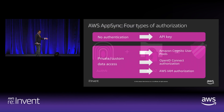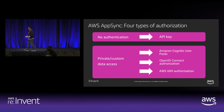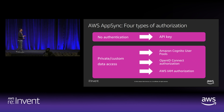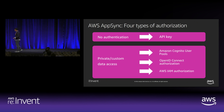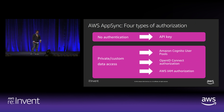AWS AppSync supports four types of auth modes covering both authentication and authorization. For public data access, we support API key — you specify the X-API-Key in the header, and any user with that key has access to any query or mutation in GraphQL. The other three — Amazon Cognito User Pools, OpenID Connect-based authorization, and AWS IAM-based authorization — represent private or custom data access patterns.